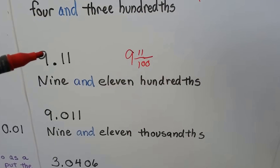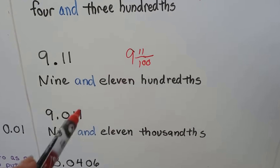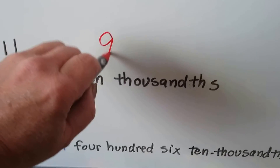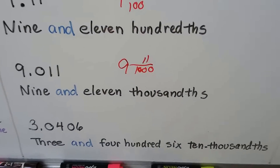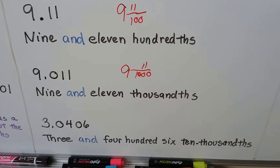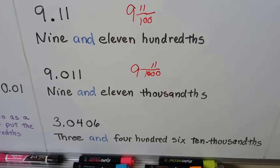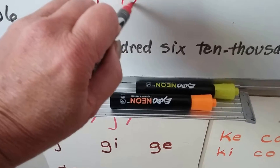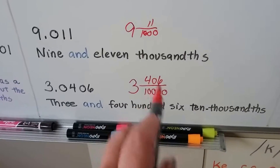Now, we went from nine and eleven-hundredths to nine and eleven-thousandths. Because the far right number is in the thousandths place, we read it as eleven-thousandths. As a fraction, that would be nine and eleven over one-thousand. This is three and four-hundred-six ten-thousandths — we read it as four-hundred-six, and then because the six is in the ten-thousandths place, we say four-hundred-six ten-thousandths. As a fraction, three and four-hundred-six ten-thousandths.